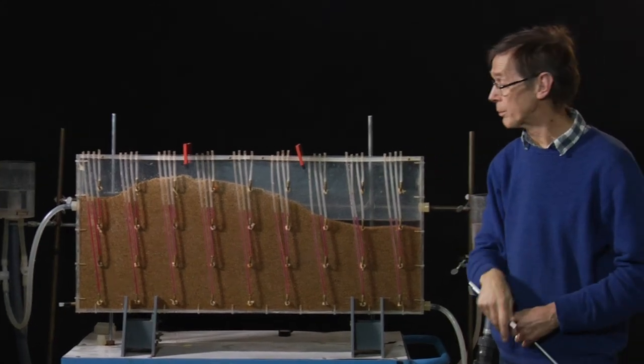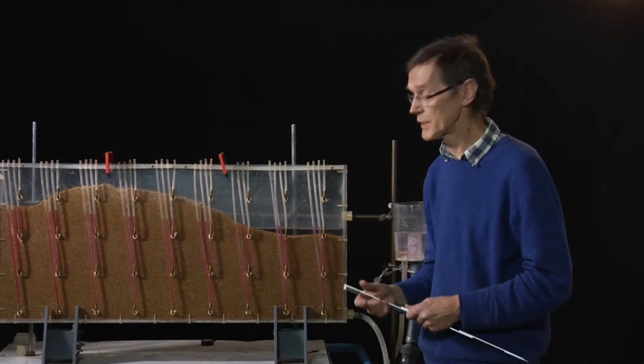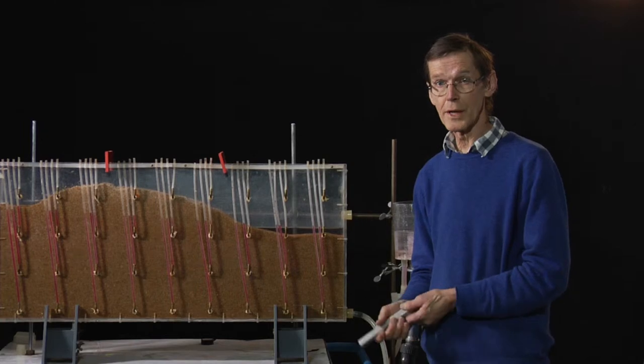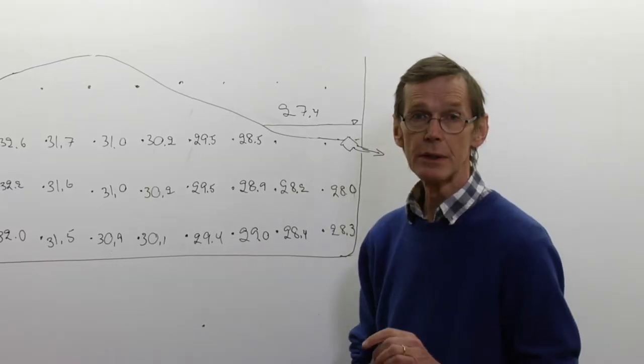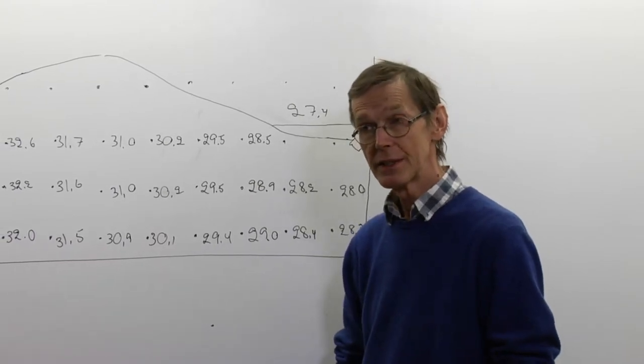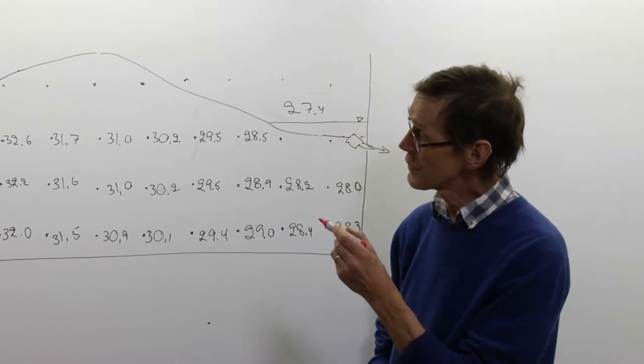We now have the total potential in all these points, and we will look at them in some detail for obtaining the potential field and from that the flow lines. Now I will, somewhat schematically, draw equipotential lines from these numbers, and then draw flow lines crossing them at right angles.